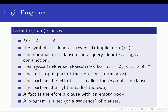So H :- A1, A2, ..., AN is just an abbreviation for: A1 and A2 and ... and AN implies H. That's why we say it's reversed implication — the right-hand side actually implies the left-hand side, not the other way around. The full stop is part of the notation; it is a terminator that ends the rule.